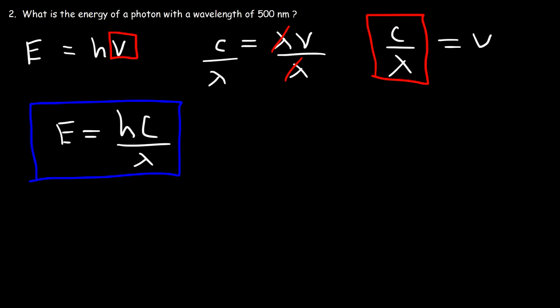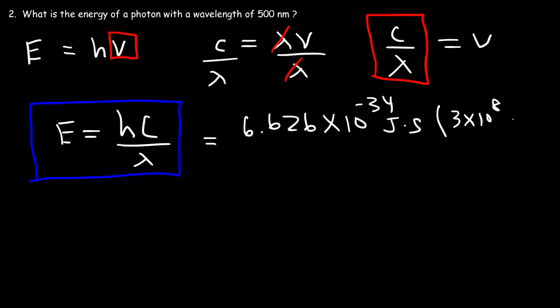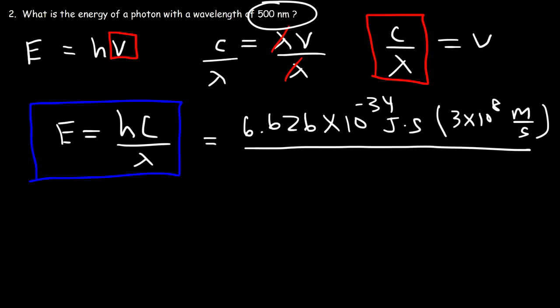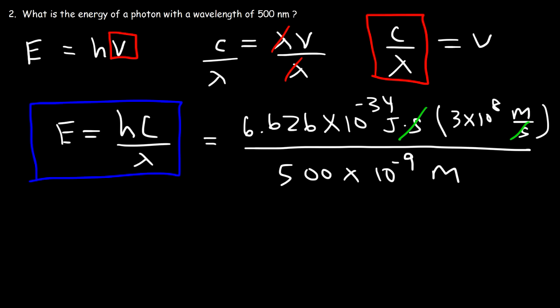So it's 6.626 times 10 to the negative 34 joules times seconds, multiplied by 3 times 10 to the 8 meters per second (the speed of light), divided by the wavelength of 500 nanometers. A nanometer is 10 to the minus 9 meters, so 500 nanometers is 500 times 10 to the minus 9 meters. The unit seconds cancels and meters cancels, leaving us with joules. The answer is 3.98 times 10 to the minus 19 joules per photon.